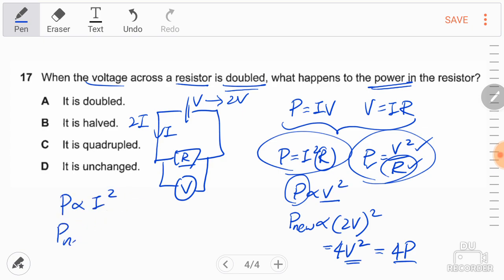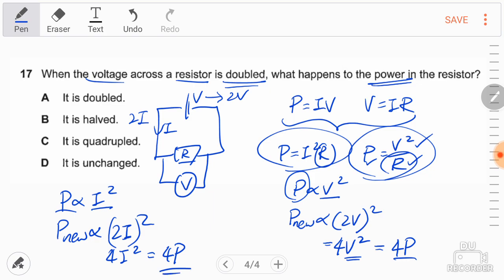And for the new power, due to the increase double in the current, due to the square it will be 4I squared. Since I squared is the original power, therefore the new power will be 4 times the original power. It's the same.